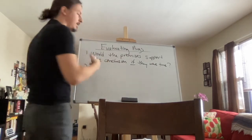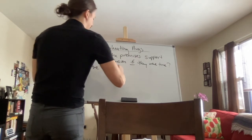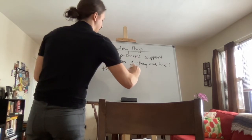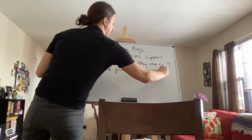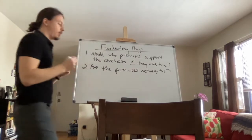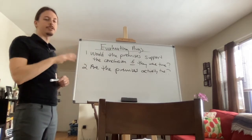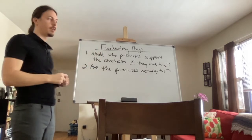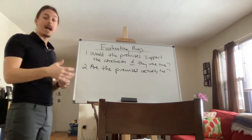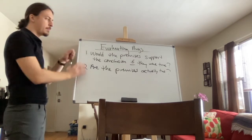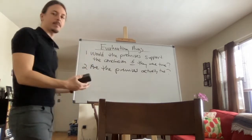Of course, that's not the only thing. The second thing you look for is: are the premises actually true? After you figure out the relationship between the premises and the conclusion regardless of their actual truth, you then look at whether or not the premises are actually true. There are different properties associated with these questions, so let's look at some examples.